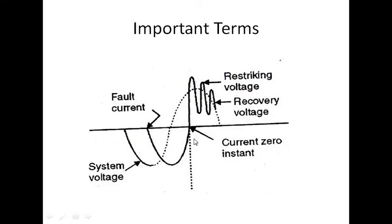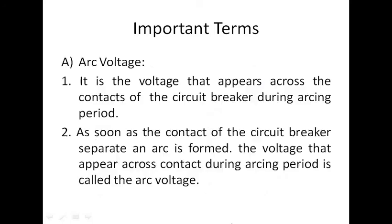Looking at the diagram, you can see restriking voltage, recovery voltage, fault current, system voltage, and current dielectric strength. Now, step by step, let's look at arc voltage. At normal condition, when the moving contact gets separated, whatever voltage appears across the fixed contact at that same time is called the arc voltage. That is, the voltage that appears across the contact of the circuit breaker during the arcing period is called the arc voltage.